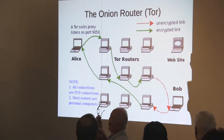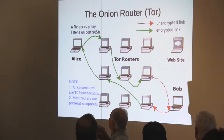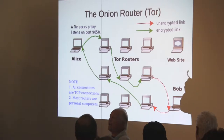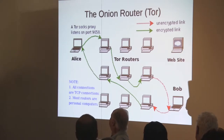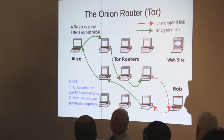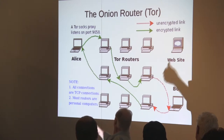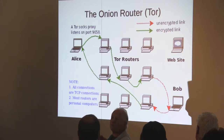This is Tor, the onion router. Here's how it works. Say you're Alice — you start off at your machine, your laptop or whatever you have, and you enter the Tor router network. Your packets bounce around in this network until finally they hit an exit node, an exit relay, and you get to the website.